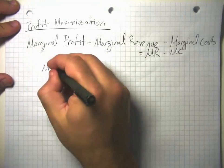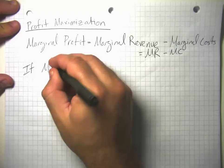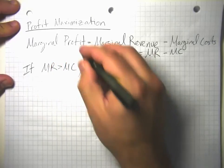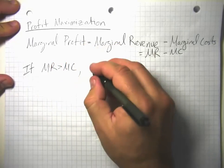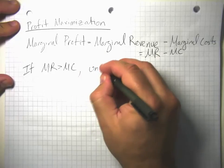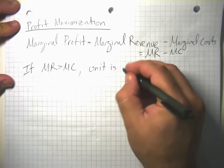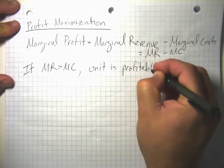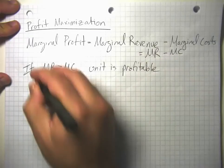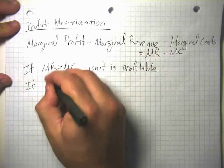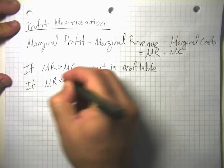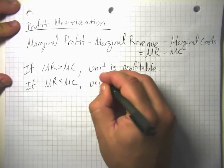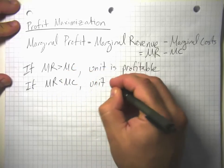Notice that if marginal revenue is greater than marginal costs, then marginal profit is positive and the unit is profitable to produce — it causes our profits to increase. If, on the other hand, marginal revenue is less than marginal costs, the unit is unprofitable.